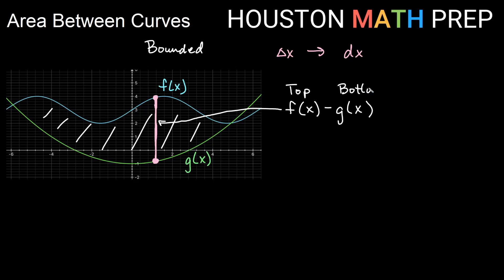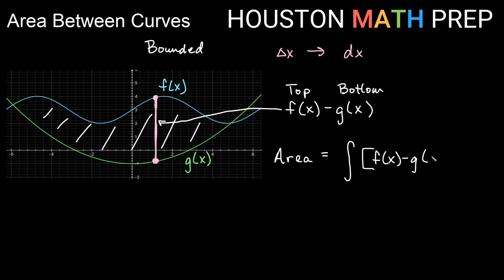It's possible in your class they have it switched, where g is actually on top and f is on the bottom. But for our purposes here, the area between the curves is going to be a definite integral — always the integral of f of x minus g of x, dx. We'll talk about the bounds in a second. All integrals here will use dx, with the rectangle going vertically.